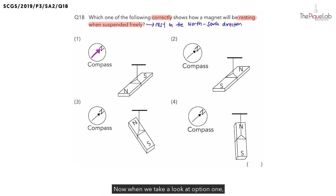Now when we take a look at option one, we know that the freely suspended magnet comes to rest in a downwards direction. Now is this the same direction as the compass needle? No. So can we choose option one as the answer? Also no. So we are going to cross out option one.